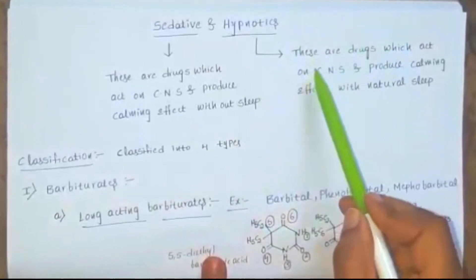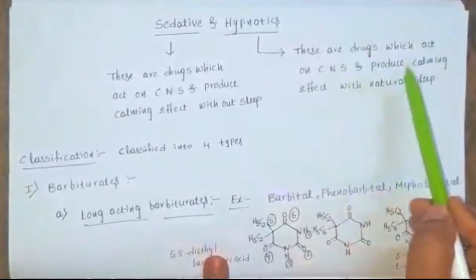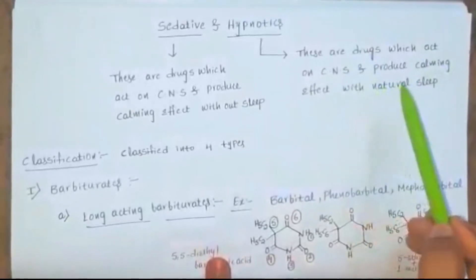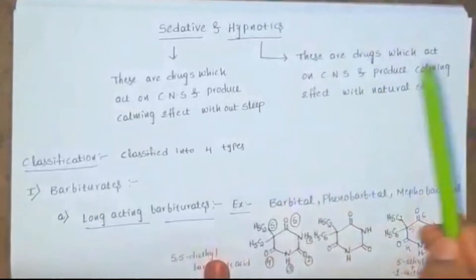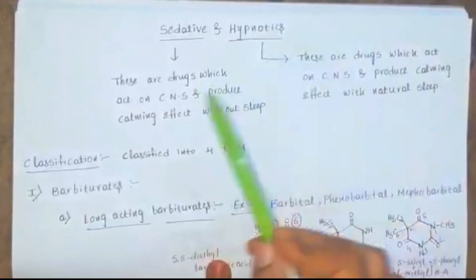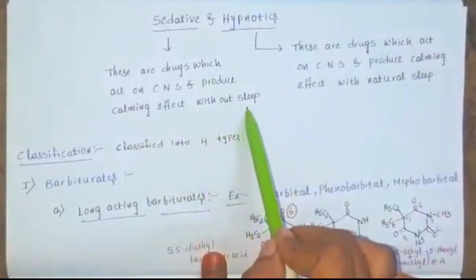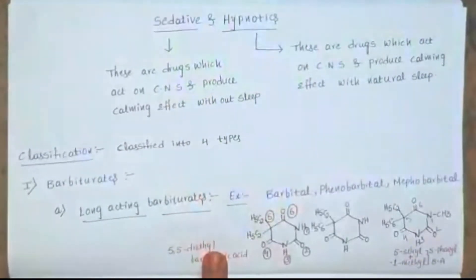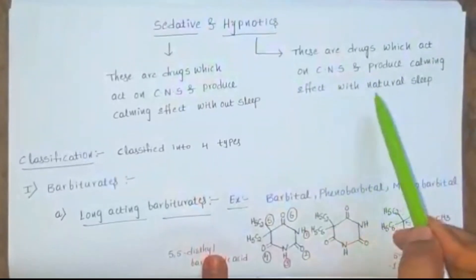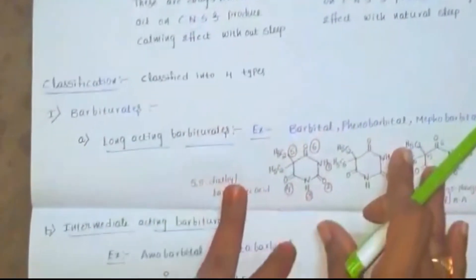Hypnotics are the drugs which act on the CNS and produce a calming effect with natural sleep. The difference between sedatives and hypnotics: producing a calming effect without sleep is called sedatives, and producing a calming effect with natural sleep is called hypnotics.